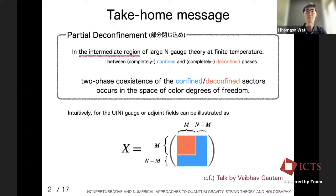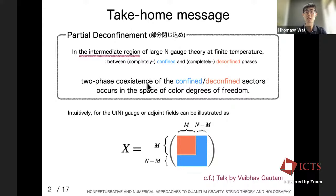Here is the main take-home message: the introduction of partial deconfinement. In short, partial deconfinement states that in the intermediate region of large-N gauge theory, especially at finite temperature, the color degrees of freedom can be separated into confined and deconfined sectors in terms of color space, and a two-phase coexistence can occur in that space.